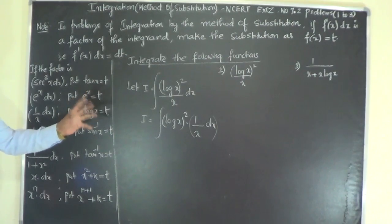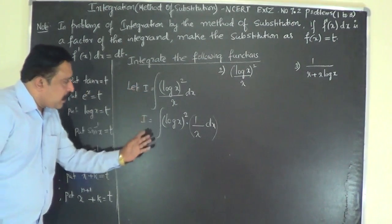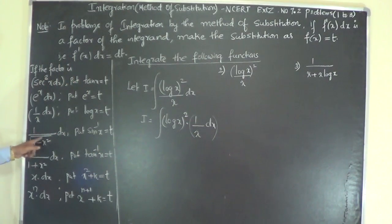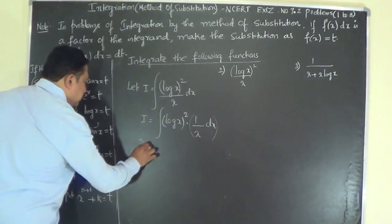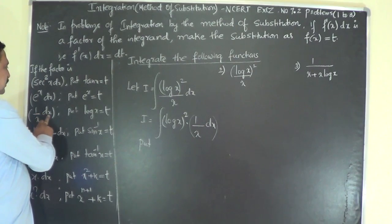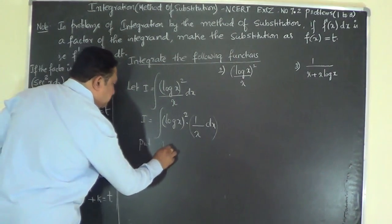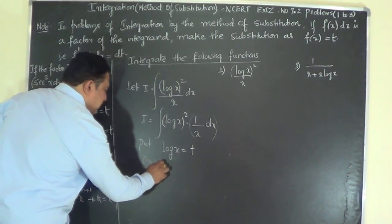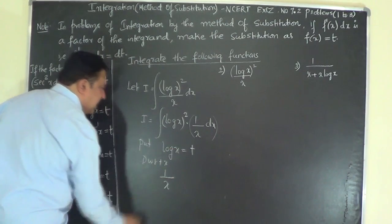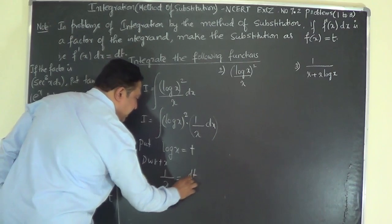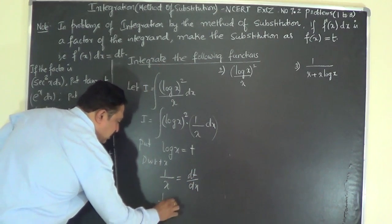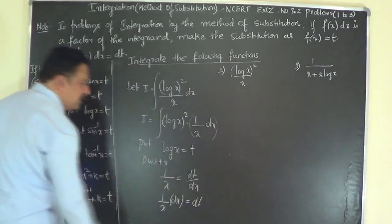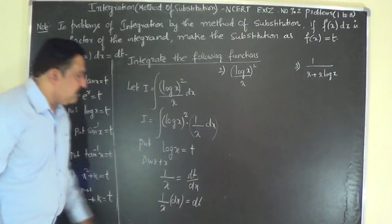You have to look into the problem first and see that you can identify the factor needed for substitution. Since 1/x dx is present, put log x = t. Differentiating with respect to x: d(log x)/dx = 1/x = dt/dx. So 1/x dx = dt. This dt is the replacement factor for 1/x dx.